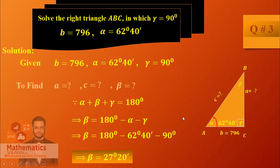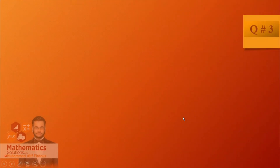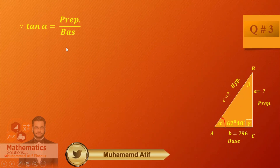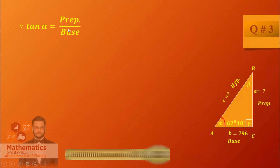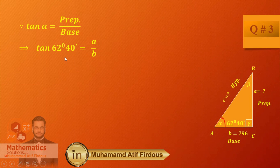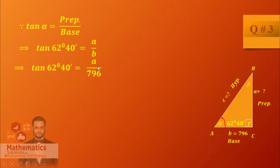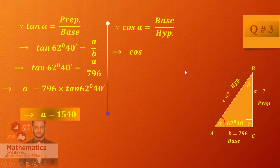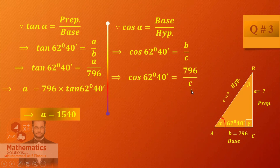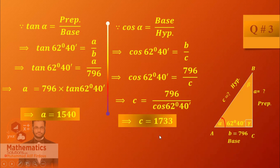Now we need to use a side and apply a trigonometric ratio. Let's look at the triangle. We need tangent alpha, which equals perpendicular over base. Here we have angle alpha and base B, so we can find side A. Just substitute and cross multiply: A equals 796 multiplied, so A equals 1540. Next, use cosine alpha which equals base over hypotenuse. Base is B equals 796 and hypotenuse is C. Cross multiply: C equals 1733.